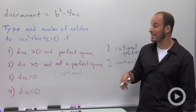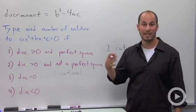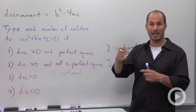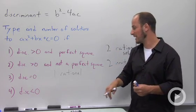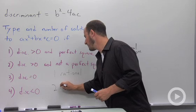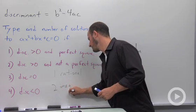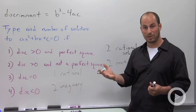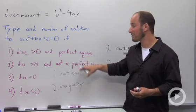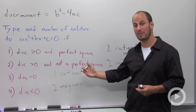The last scenario for our discriminant is it's less than zero - a negative number. That means what's going into the square root is negative, which means we have two imaginary solutions. Square root of a negative number is an imaginary number, so we're not going to have any real solutions, just imaginary solutions.